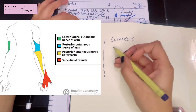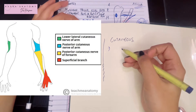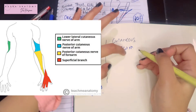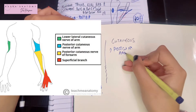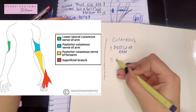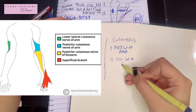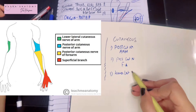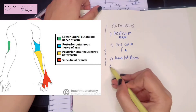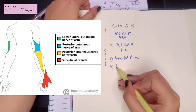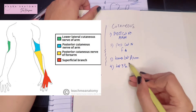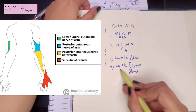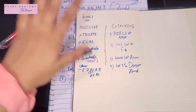Now let's talk about the cutaneous supply of the radial nerve. It includes the posterior cutaneous nerve of the arm and the posterior cutaneous nerve of the forearm. Then we have the lower lateral side of the arm supplied by the radial nerve, and finally the lateral three and a half digits of the dorsum of the hand — not the palm, the dorsum — with the exception of the distal phalanges, as we've already discussed.